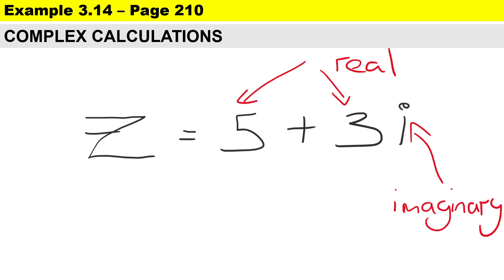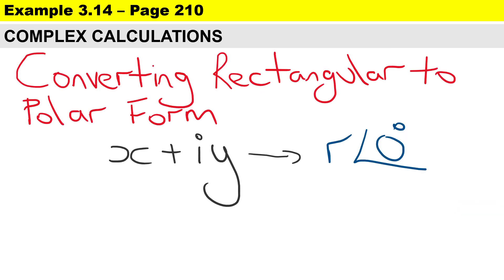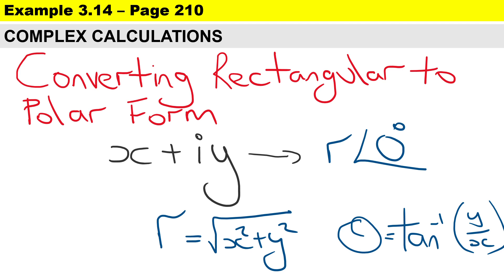In this example, 5 and 3 are our real numbers and i is the imaginary part. When converting rectangular to polar format, the calculator computes r as the square root of x squared plus y squared, and the angle is arctan of y divided by x.